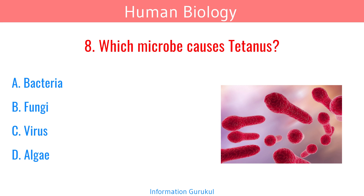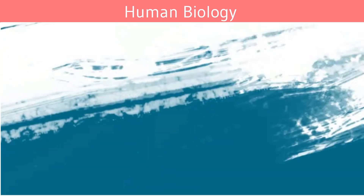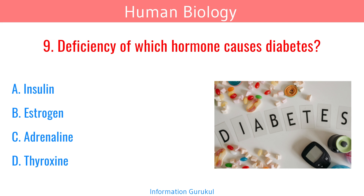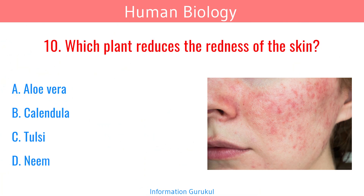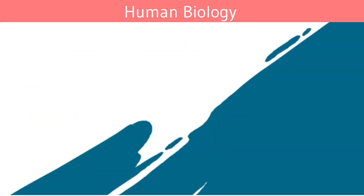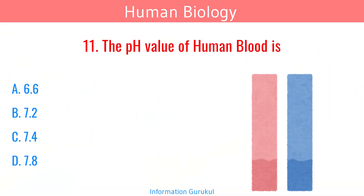Which microbe causes tetanus? Bacteria. Deficiency of which hormone causes diabetes? Insulin. Which plant reduces the redness of the skin? Calendula. The pH value of human blood is 7.4.